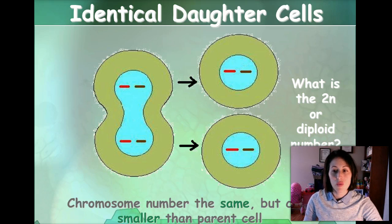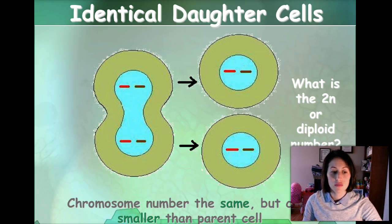For this one, what is the 2N, or the diploid number, for these cells? Hopefully you said 2.